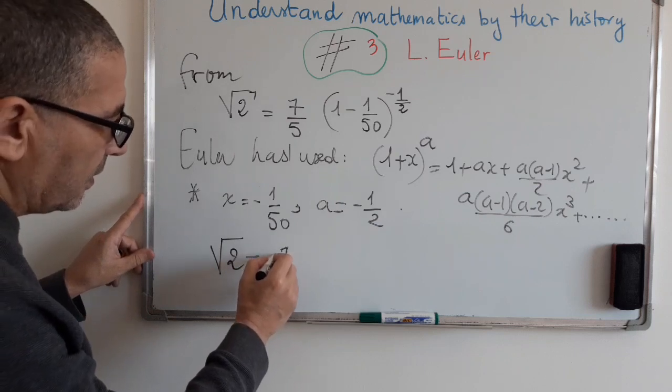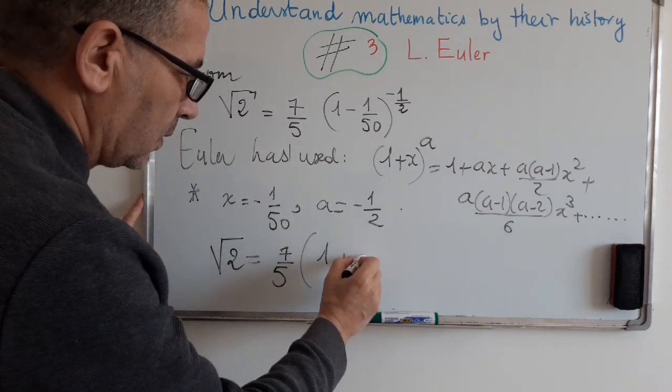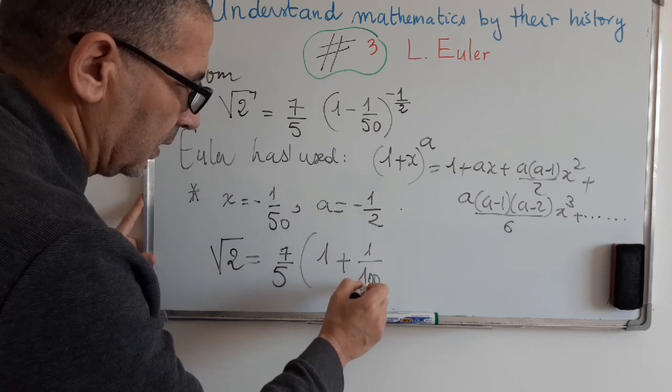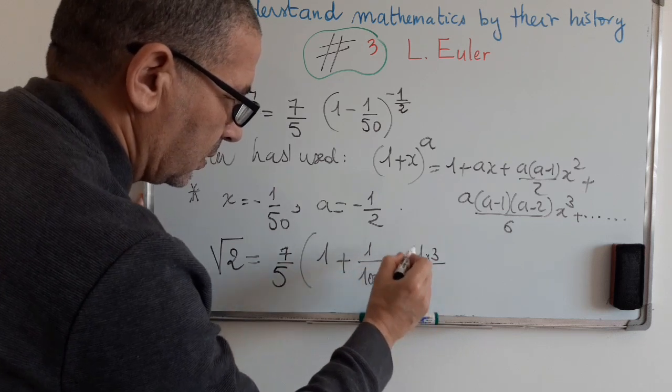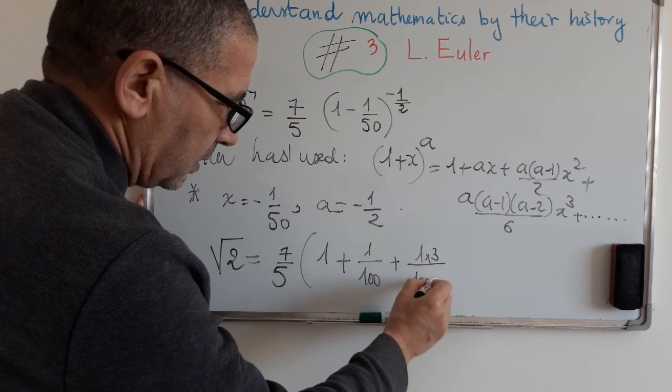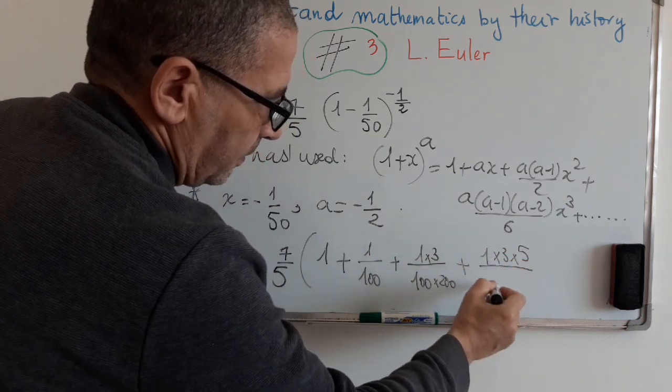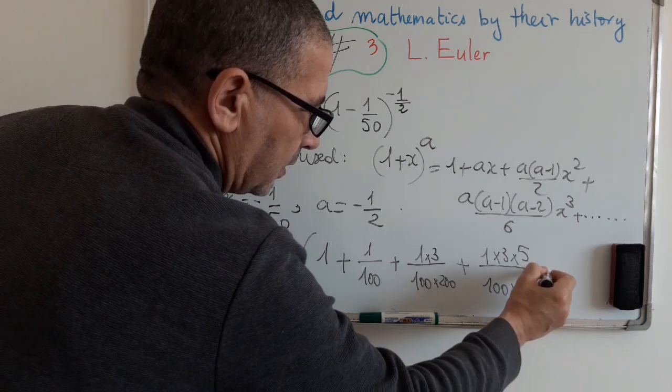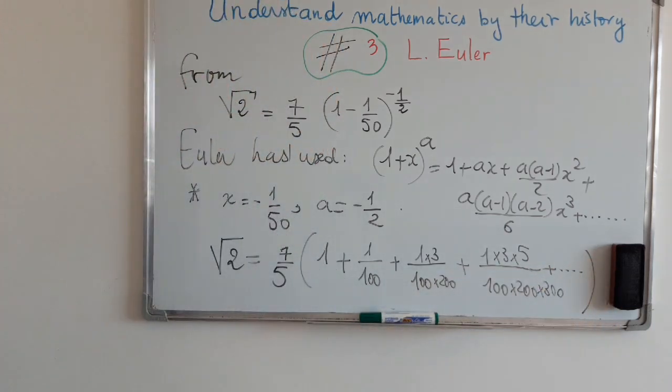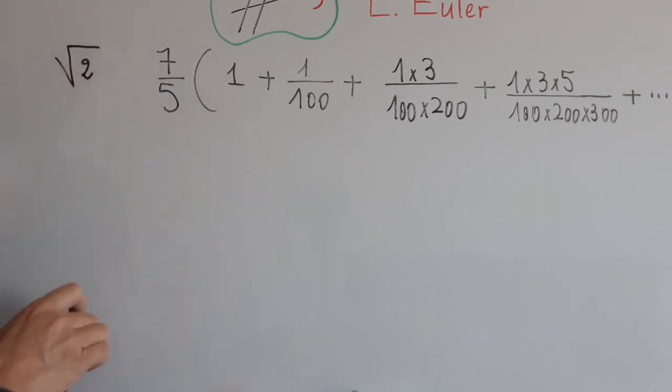As Euler had done, 7 over 5 times 1 plus 1 over 100 plus 1 times 3 times 1 over 100 squared times 200, plus 1 over 100 times 200 times 300, etc. Now, from this expansion, we can obtain an approximate value of square root of 2.